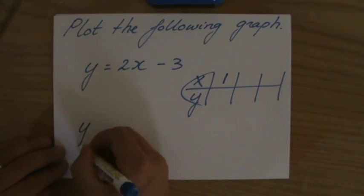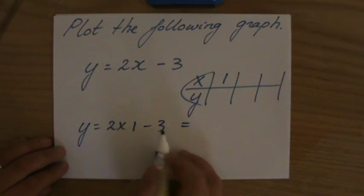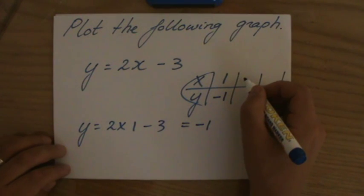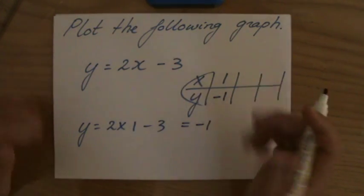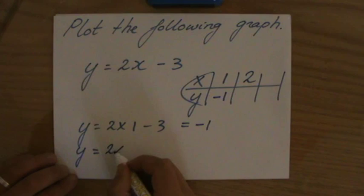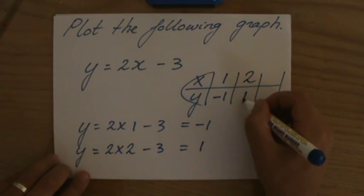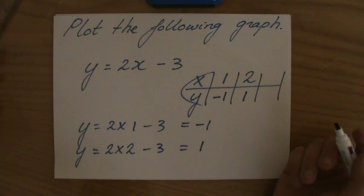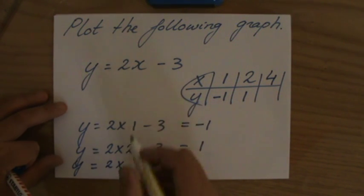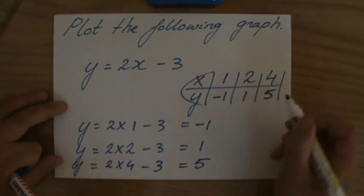For instance, I could choose x is 1. When x is 1, what is my y coordinate? y is 2 times 1 minus 3, which is 2 minus 3, which is minus 1. Choose something else for x. If I take 2, then y is 2 times 2 minus 3, that is 4 minus 3, that is 1. And one more number, let's go a little bit crazy, let's take 4. When x is 4, y is 2 times 4 minus 3, which is 8 minus 3, that is 5.